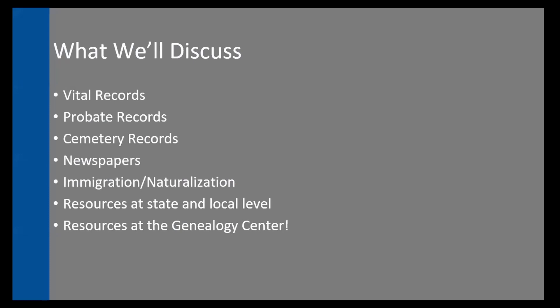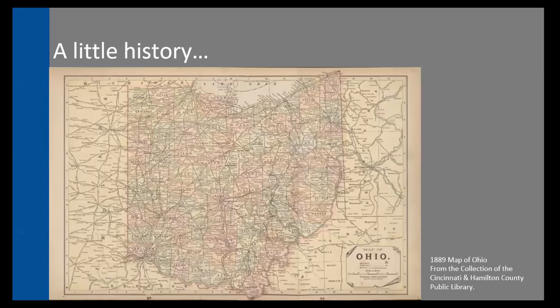A little bit of what we'll be talking about today: we'll discuss vital, probate, and cemetery records, immigration and naturalization records at the state and local level, and resources that we have here at the Genealogy Center as well. I wanted to provide a brief bit of historical information before getting into the records. Ohio became a state in 1803, and before statehood dating way back to the 1600s, there were Native American tribes living in Ohio. This included the Delaware, the Shawnee, the Mingo, Miami, and a couple of others as well.